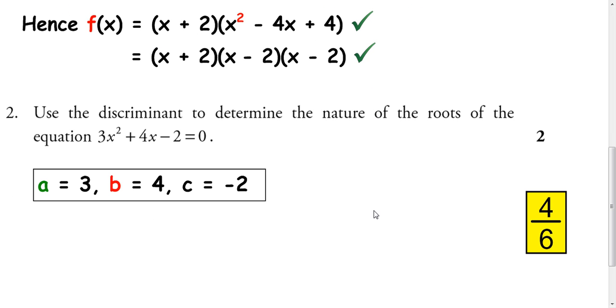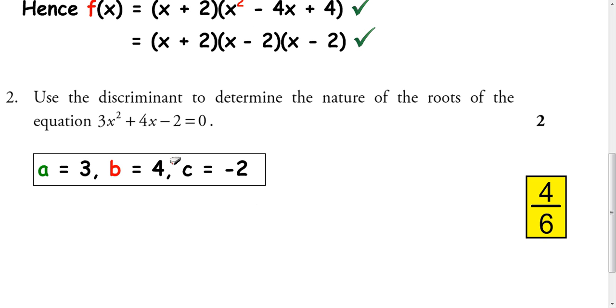Question 2: Use a discriminant to determine the nature of the roots of the equation 3x squared plus 4x take away 2 equals 0. So the discriminant is b squared minus 4ac. We get our a, b, and c values from looking at this. Again, looking at coefficients. Your a term is your coefficient of x squared, so we can write that's 3. b is the coefficient of x, which is 4, and c is the number at the end, the negative 2.